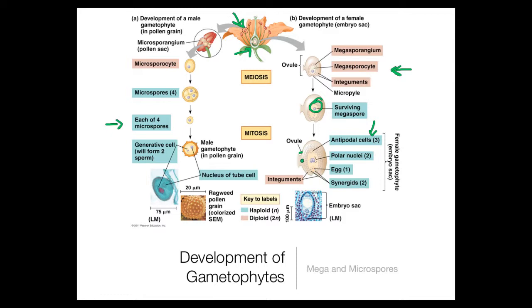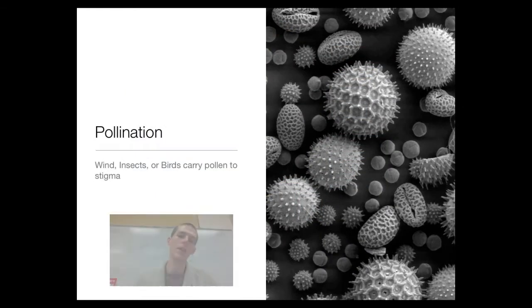You've got two polar nuclei, those are going to be important in a minute. And then down at the bottom you get a set of three cells: in the middle is the egg and there are two synergids on the sides. Each of these are haploid cells, all those ones that I talked about are haploid cells, and the whole thing is contained within an ovule. This would be the megaspore that is the female gametophyte.